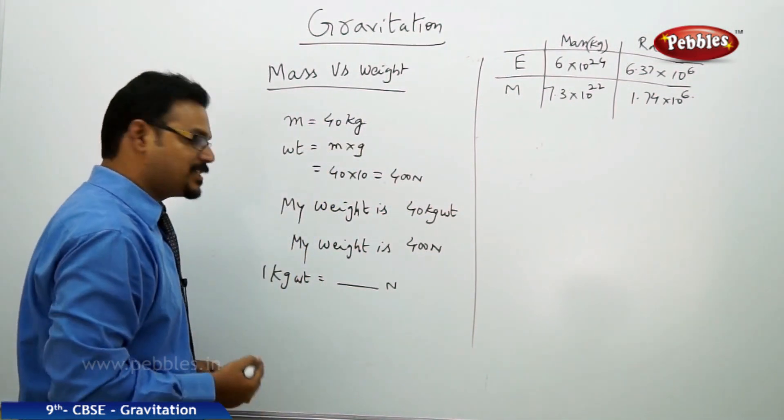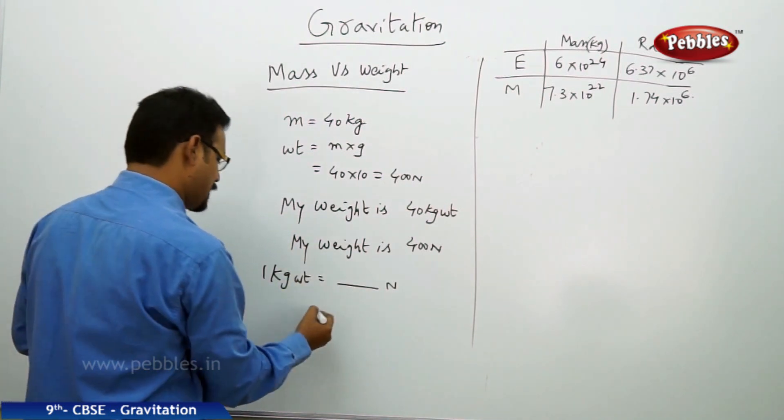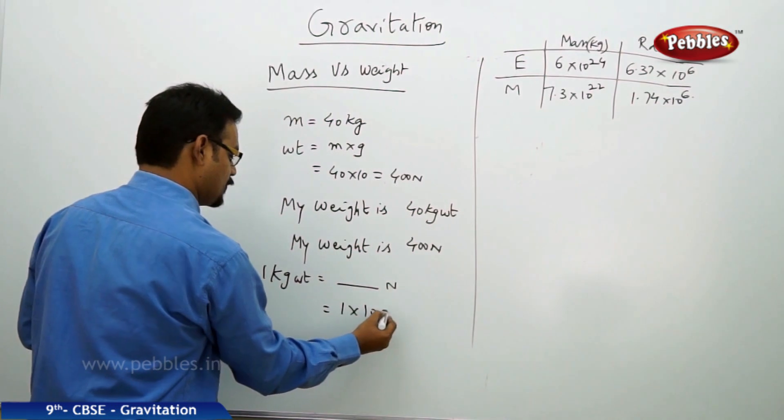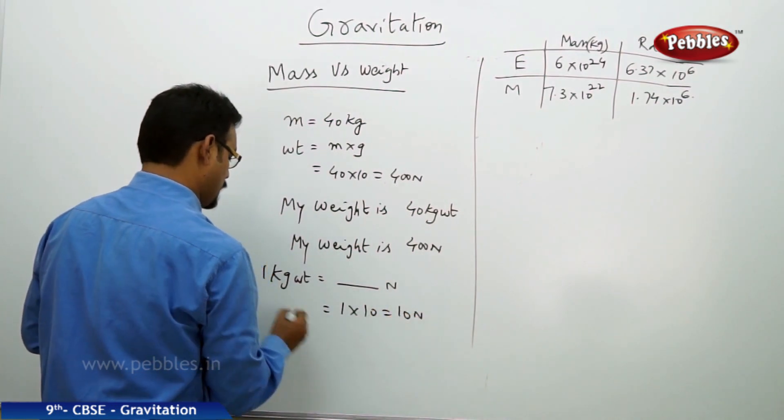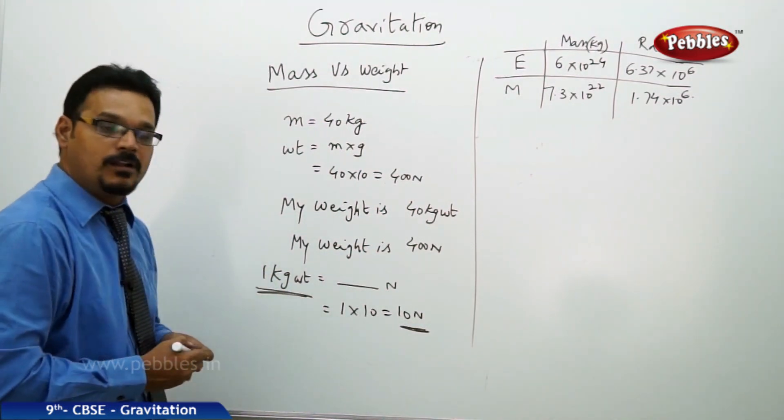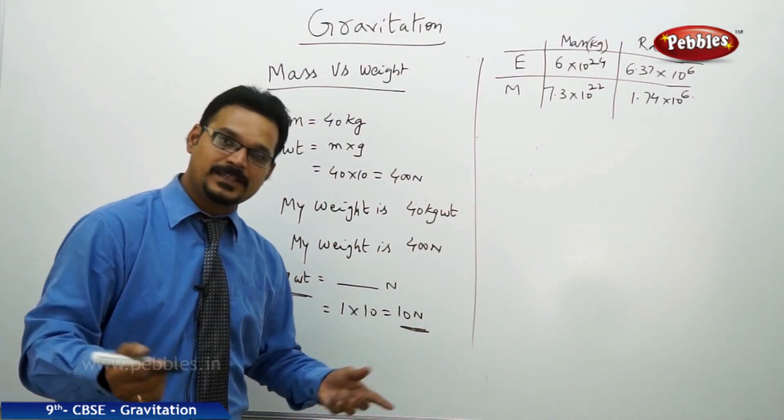The answer can be found like this: weight equals m into g, mass into acceleration due to gravity. So the mass is 1 kg, g is 10, so there's nothing but 10 newtons. So 1 kg weight is equal to 10 newtons.